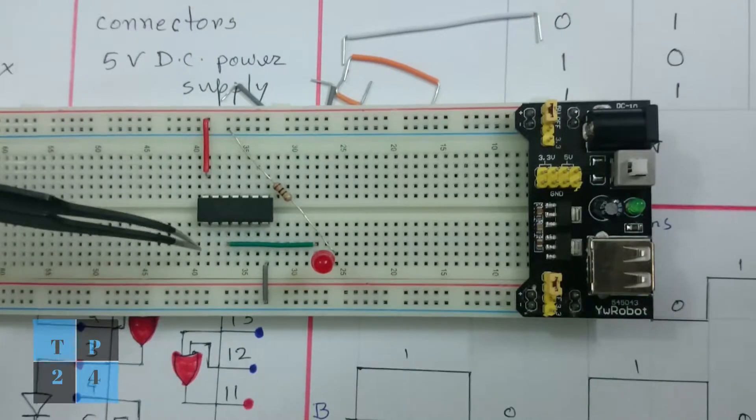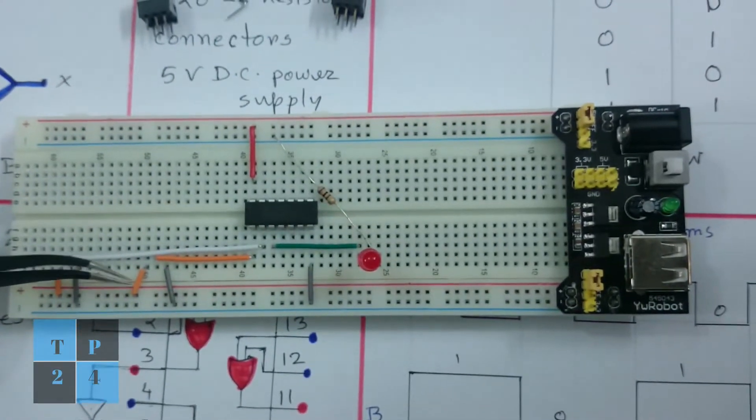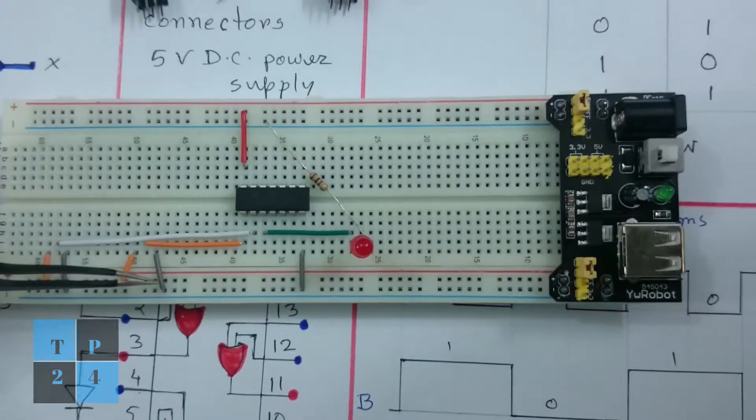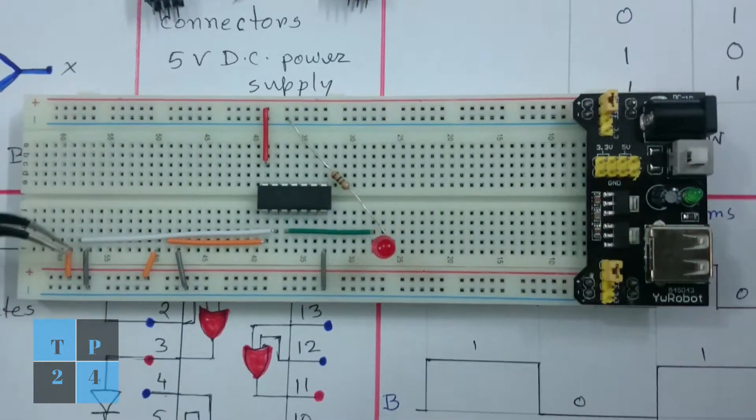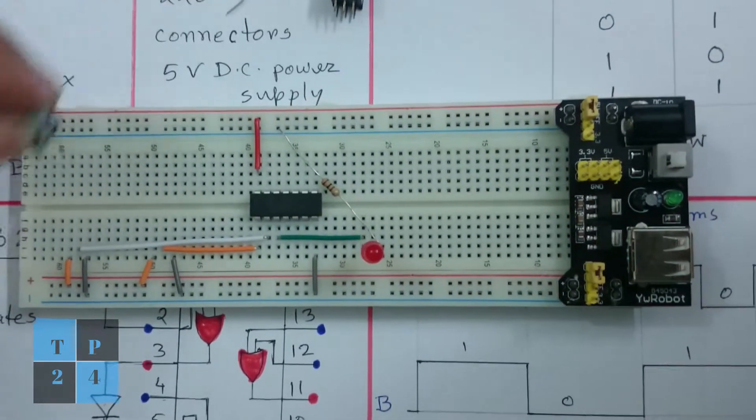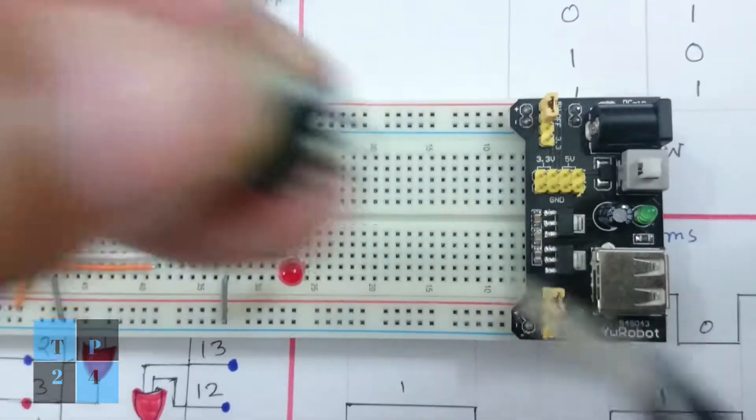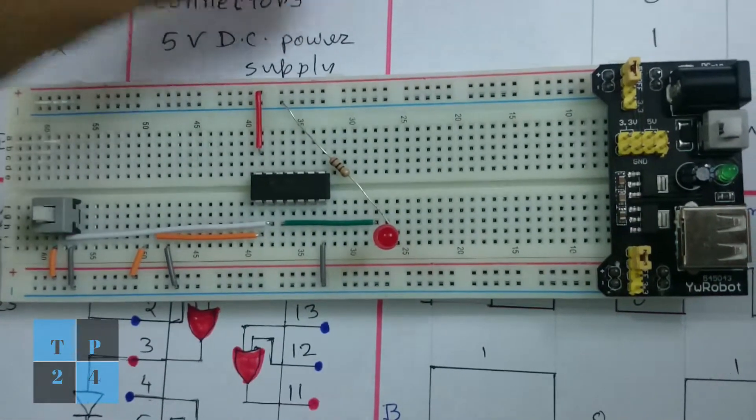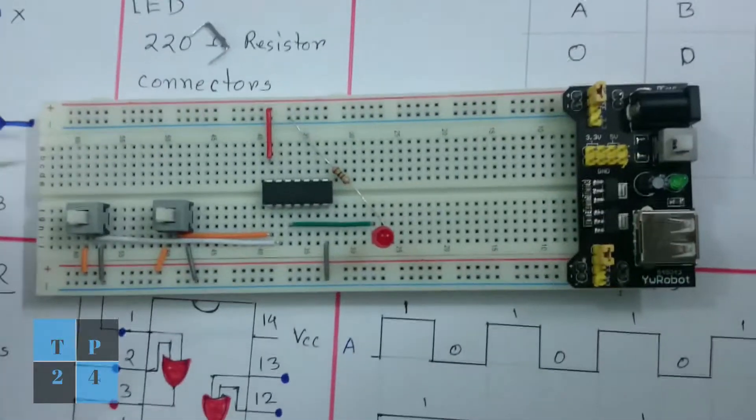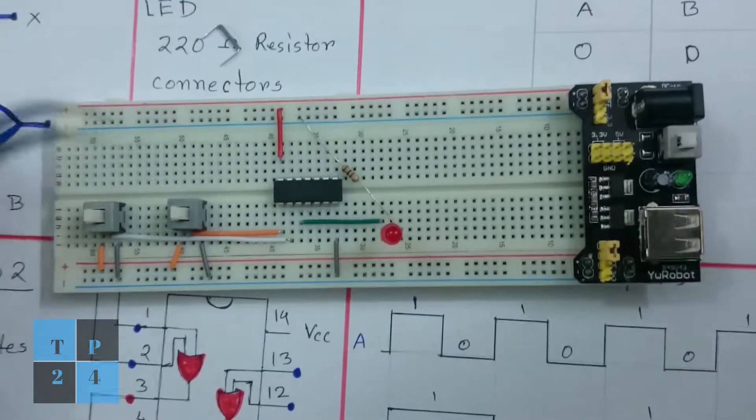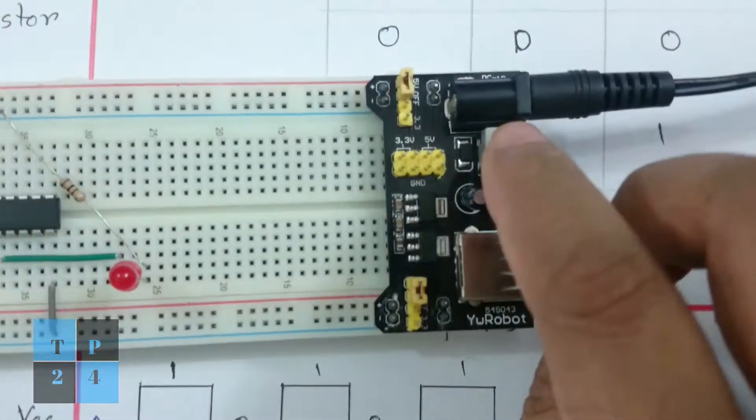Now I am going to connect pin number 1 and pin number 2 as inputs. So I connected positive rail here and negative rail here, and similarly for another input I connected a positive rail and negative rail. And I am going to put this switch and the middle pin, the middle pin is going to be connected as an input, and also same thing.